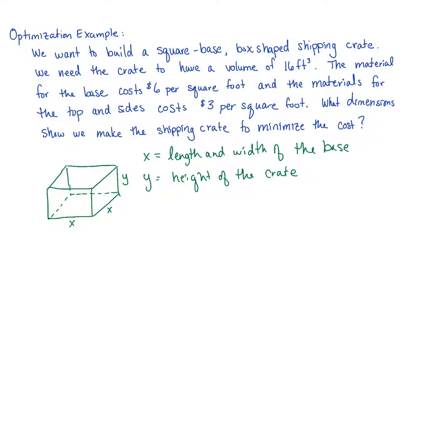We need the crate to have a volume of 16 cubic feet. Remember volume is length times width times height. Our length and width are both x and our height is y. So we need 16 equals x squared times y. This is a constraint or restriction that we have on our situation.